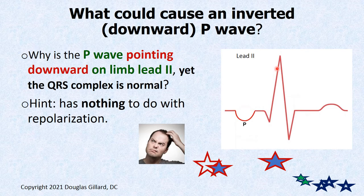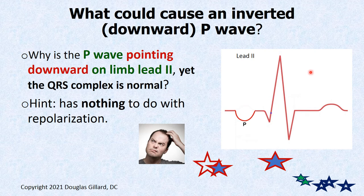What about an inverted P wave? We have a P wave upside down. Everything else — QRS complex is fine, T wave is fine. What in the world would cause that? It doesn't have anything to do with atrial repolarization. The atrial repolarization wave would be upside down, but where is it? It's hidden right inside the QRS complex — the left ventricle electricity overpowers it, so it's hidden.